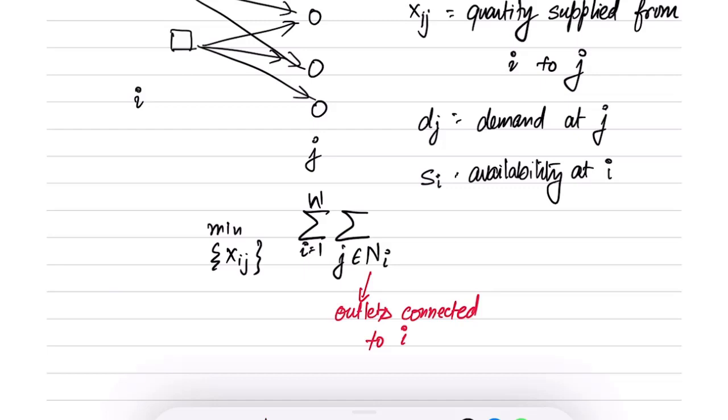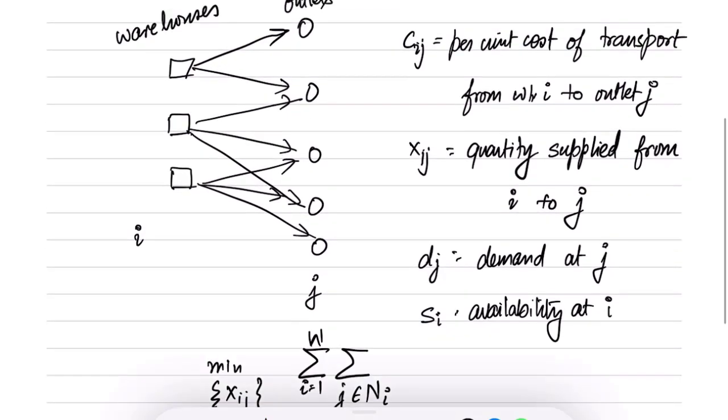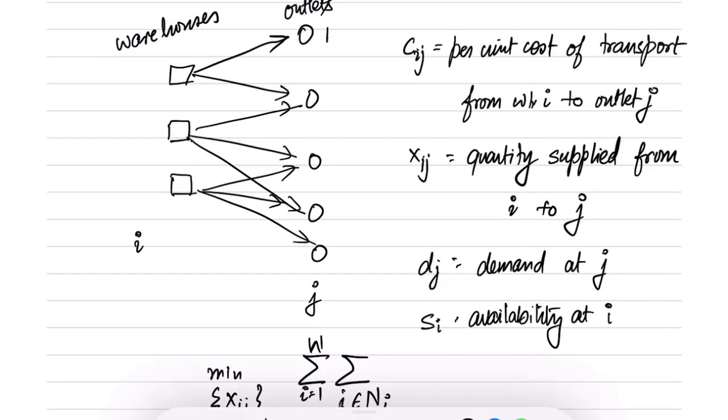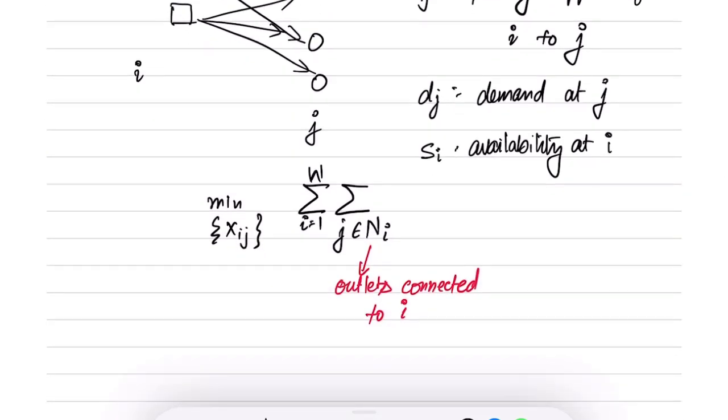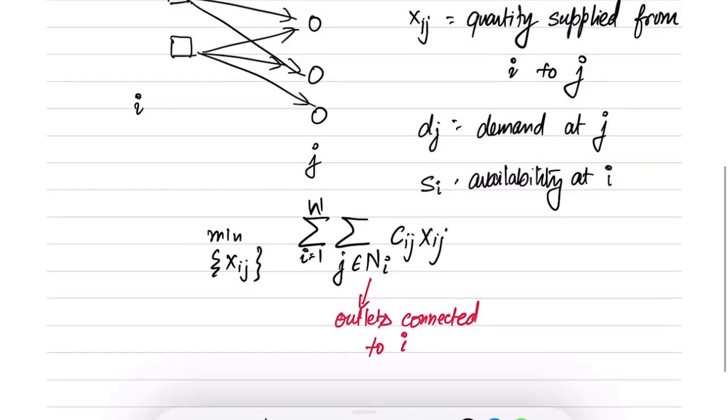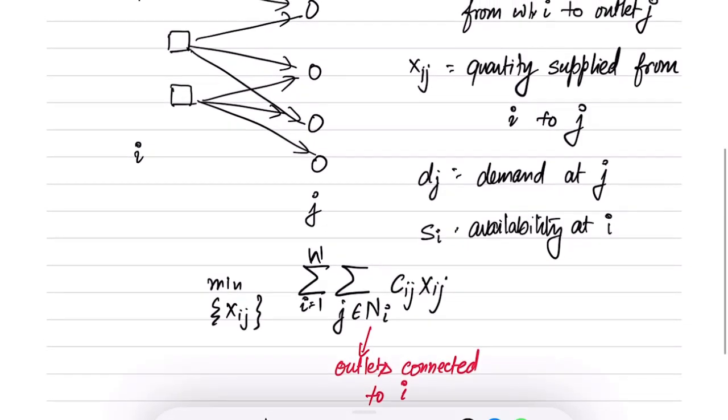I am summing over all j that belong to this set ni. The objective function becomes summation of Cij times Xij. This is the total cost that the company is incurring, because I am multiplying per unit cost with the total amount being shipped. The goal is to find Xij such that this total cost is minimized.